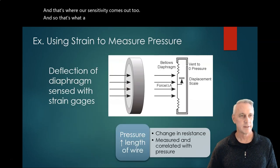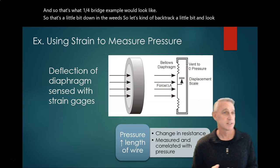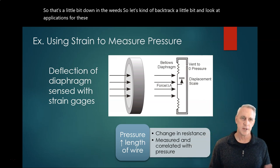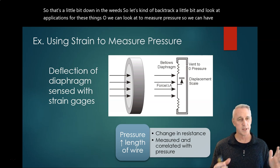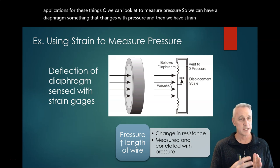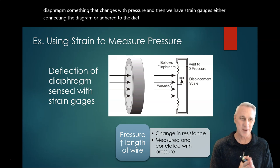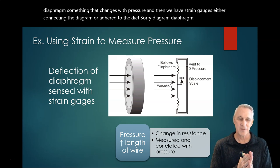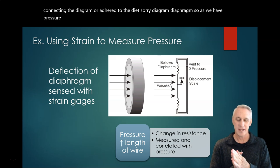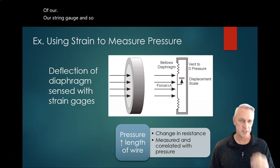So that's a little bit down in the weeds. So let's backtrack a little bit and look at applications for these things. So we can look at strain to measure pressure. So we can have a diaphragm, something that changes with pressure. And then we have strain gauges either connecting the diaphragm or adhered to the diaphragm. So as we have pressure increasing, we get an increased stretch of our strain gauge. And so our displacement goes up, we can measure that.